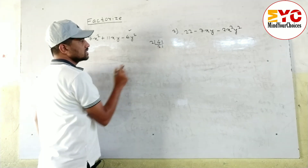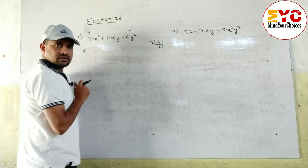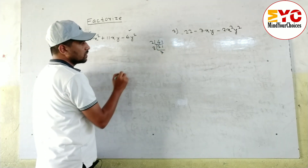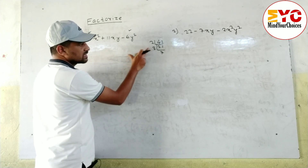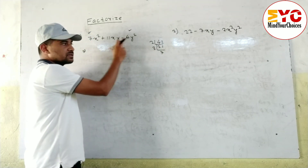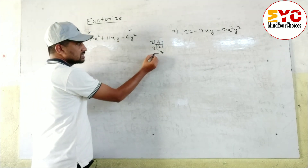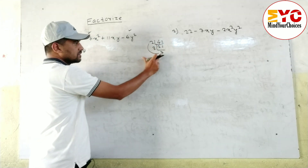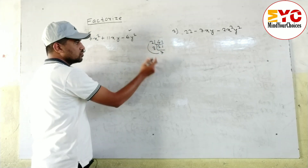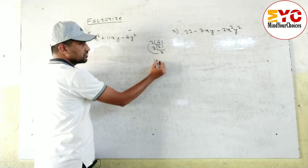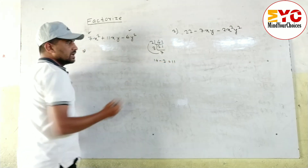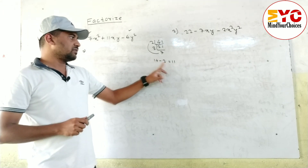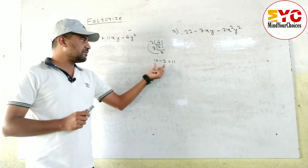Let's try: 2 × 21 = 42, but 21 - 2 = 19, not 11. Try 3 and 14: 3 × 14 = 42. Now 14 - 3 = 11. Yes! So the factors are 14 and 3 — when you subtract them we get 11, and when you multiply them we get 42.